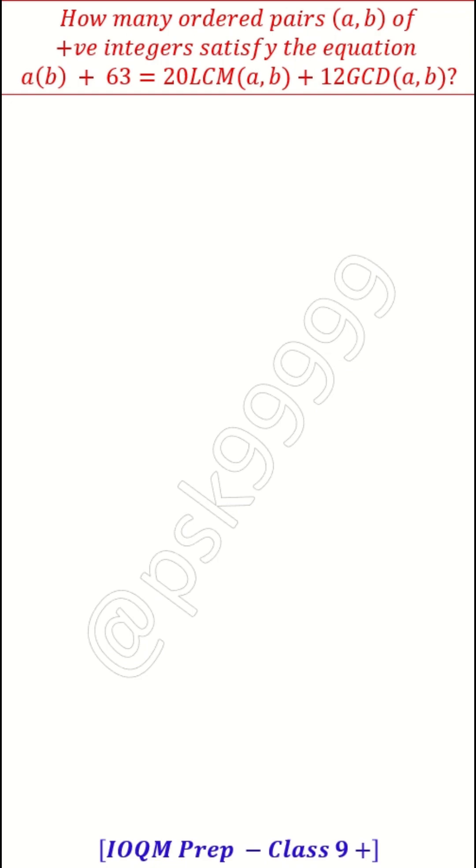First thing we need to do is convert it to a proper equation. LCM of (a, b) and GCD of (a, b) are not the variables. We need to convert them into proper equation. What is the relation between two numbers and its LCM and GCD? Product of two numbers equals LCM times GCD, that we know.